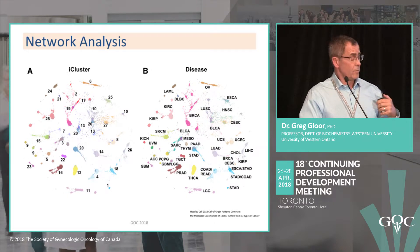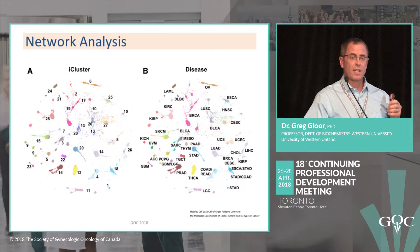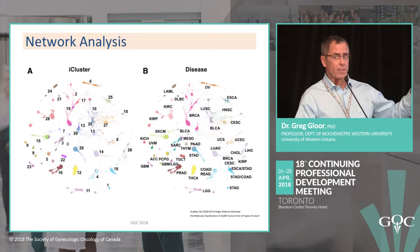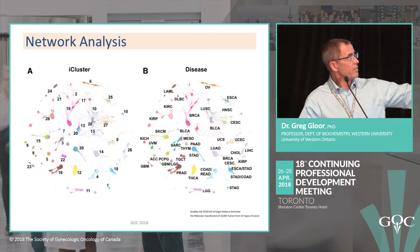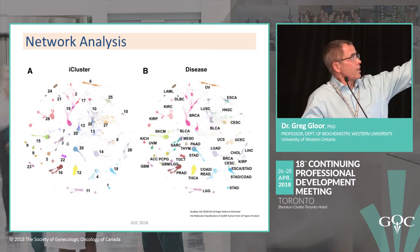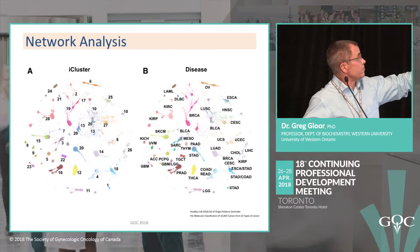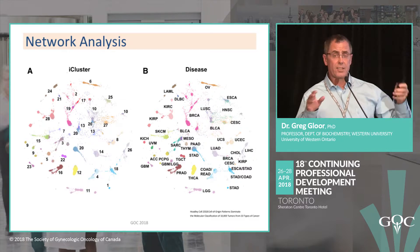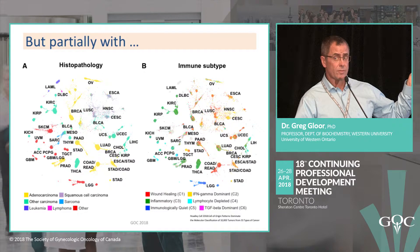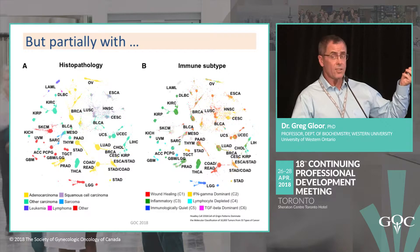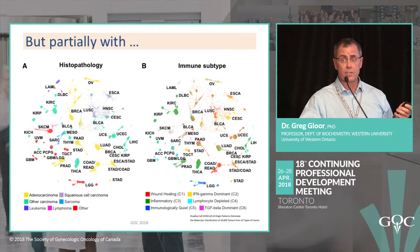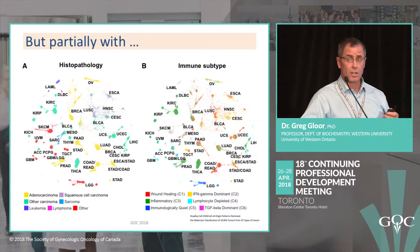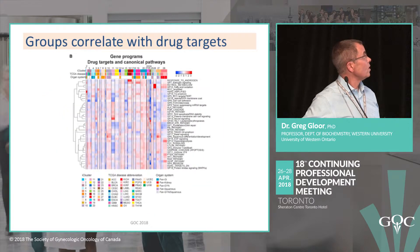This paper came out a couple of weeks ago in Cell: 'Cell of Origin Patterns Dominate the Molecular Classification of 10,000 Tumors' across 33 cancer types. The take-home is in the title: cell of origin dominates over histology. They came up with 25 clusters, and to a first approximation many clusters map to unique cancer types — cluster 6 is ovarian cancer, cluster 19 is breast cancer. The clusters group largely by disease but not by histopathology, and are almost completely uncorrelated with immune subtype.